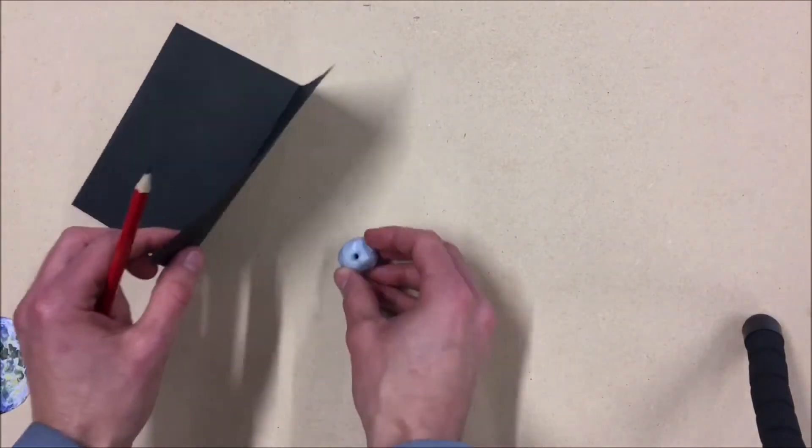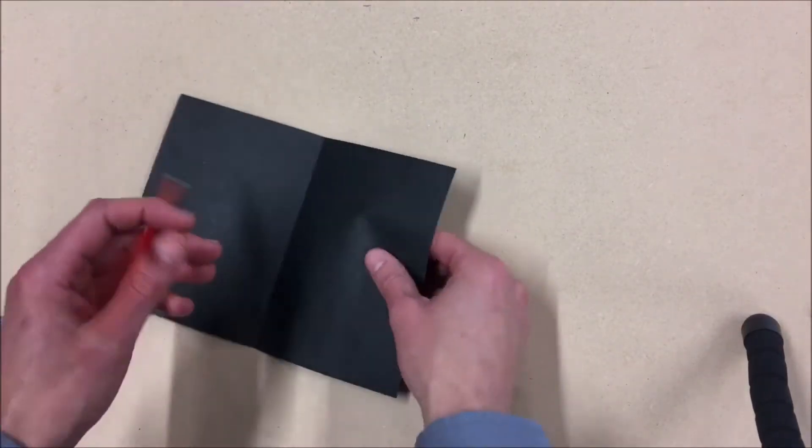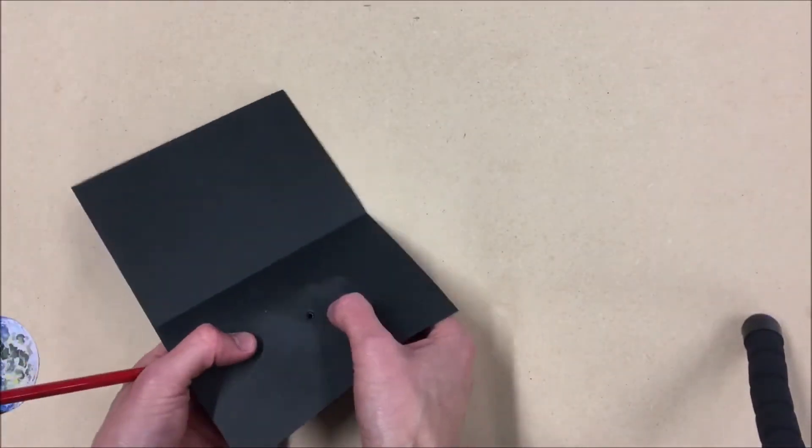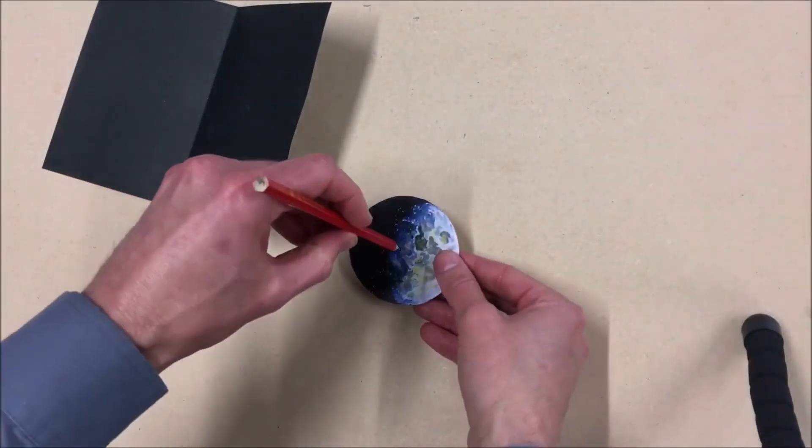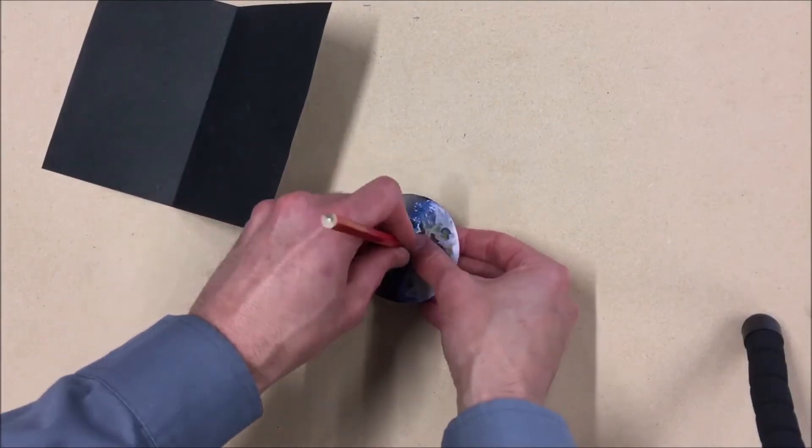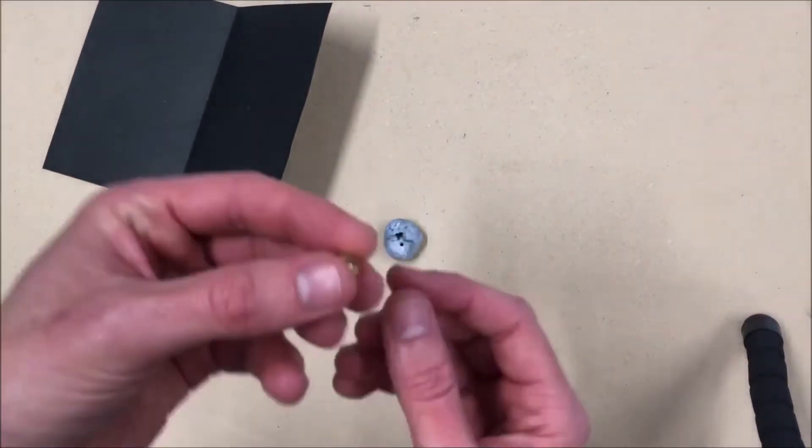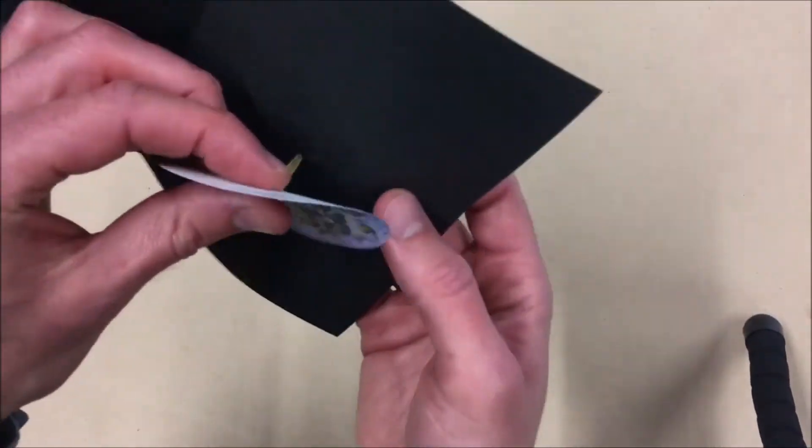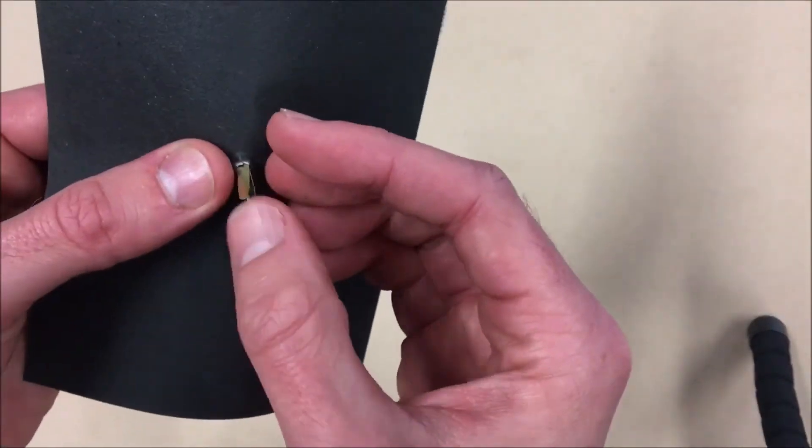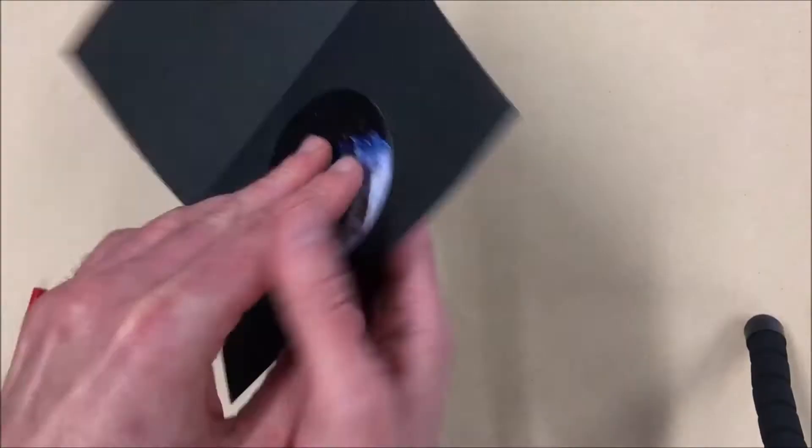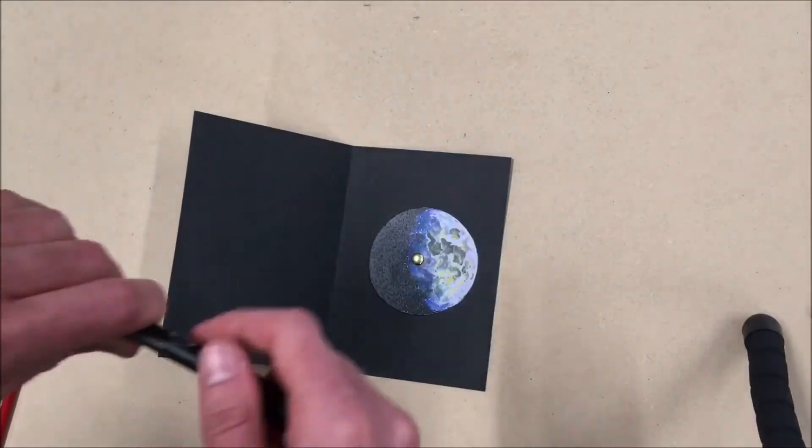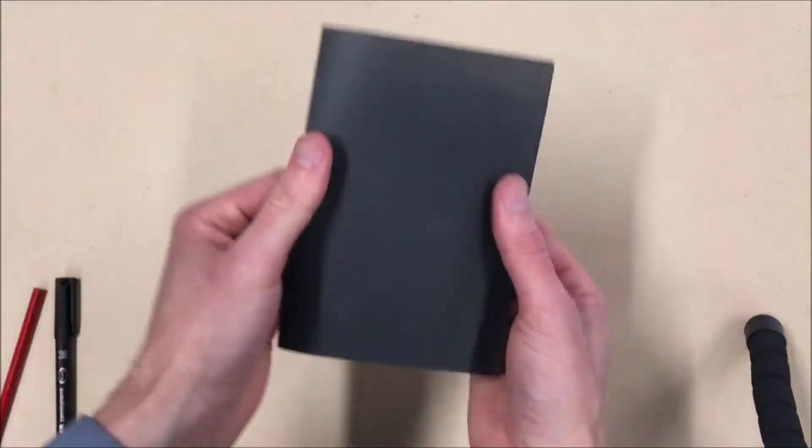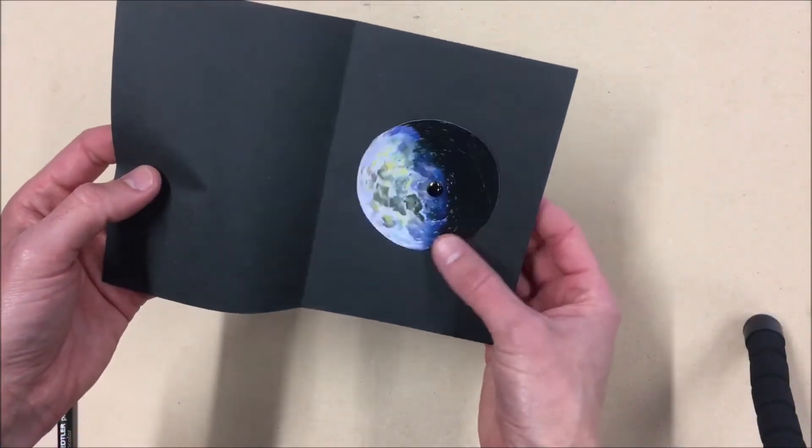And then using some blue tack underneath and a sharp pencil, pierce one hole through the actual card itself. And then pierce another hole through the center of your spinning disc. Then with a split pin, put it carefully through both the spinning disc and the piece of card. Fold out the back pin edges. And then if you want to cover up the shiny element of the split pin, you can do. And there you go, spinning moon.